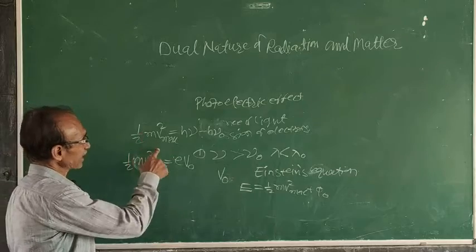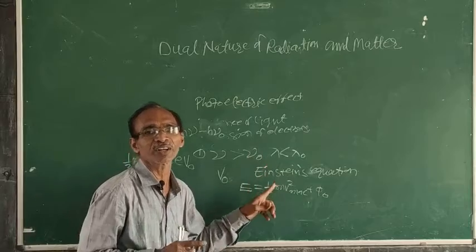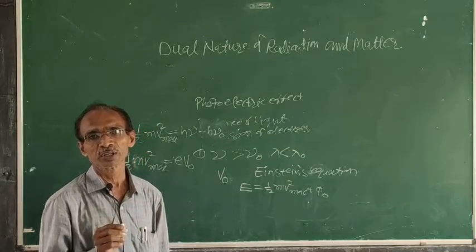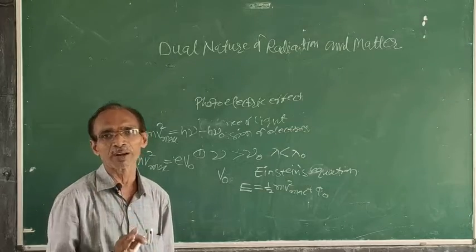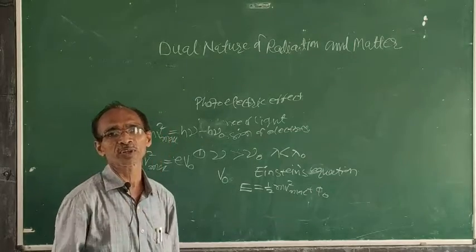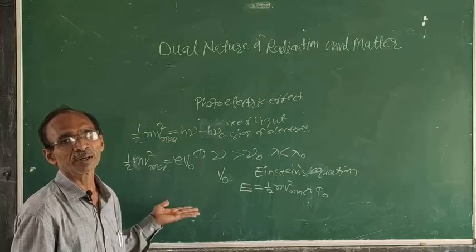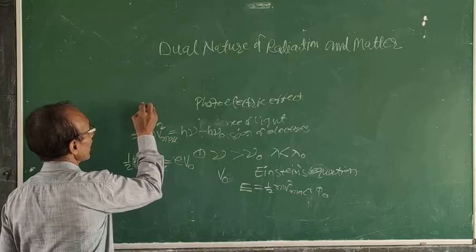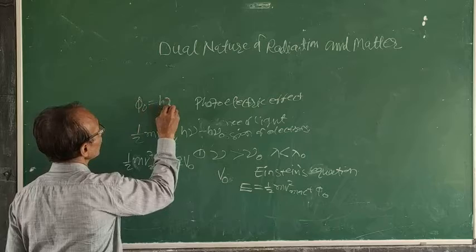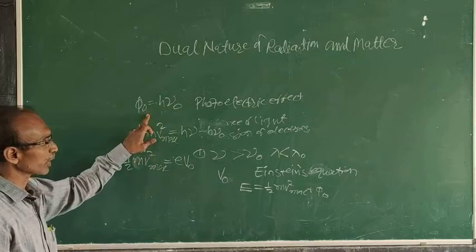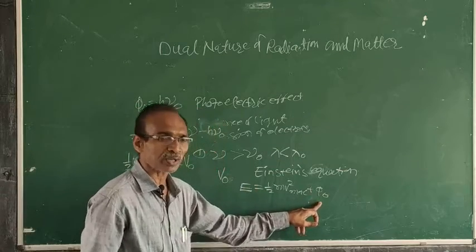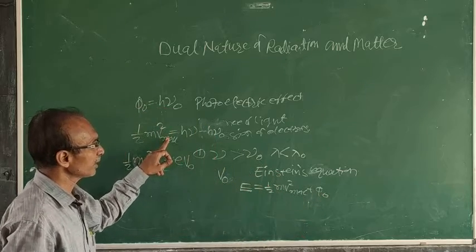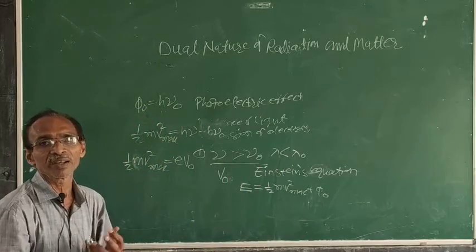This represents the maximum kinetic energy. According to Einstein, when light is incident on a metallic surface, the energy is divided into two parts: a small part of energy is used for leaving the metallic surface, and the remaining large part of energy allows the electron to move towards the anode. The maximum kinetic energy is expressed as ½mv²_max, and the work function φ₀ is equal to hν₀. This is Einstein's photoelectric equation, giving a complete picture of the photoelectric effect.